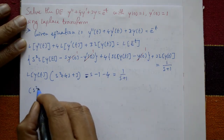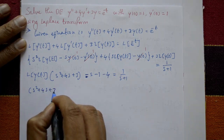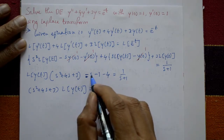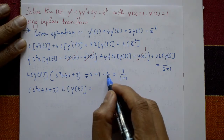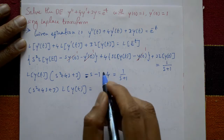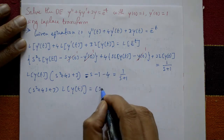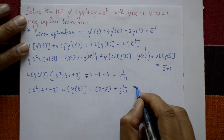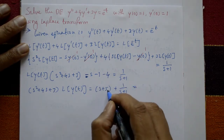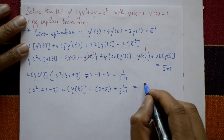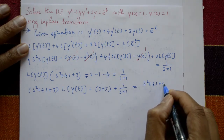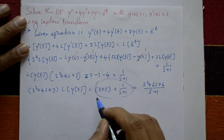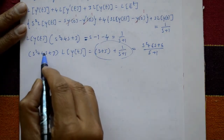So s squared plus 4s plus 3 into Laplace of y of t is equal to s plus 5 plus 1 upon s plus 1. Taking LCM on the right-hand side, we get s squared plus 6s plus 6 upon s plus 1.